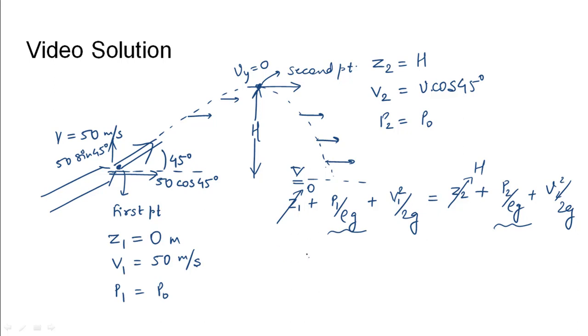So this term would reduce to v1 squared over 2g equals capital h plus 50 cos 45 squared over 2g. This would give h as 1 over 2g times 50 squared minus 35.36 squared.